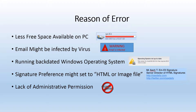The reasons for the 'access to data denied' error are: less free space available on your computer, email might be infected by a virus, running an outdated operating system, signature preference might be set to HTML or image file, and lack of administrative permission in your user account.